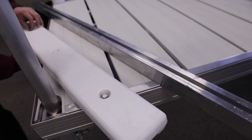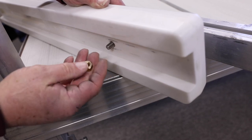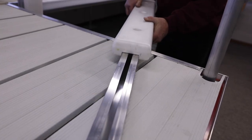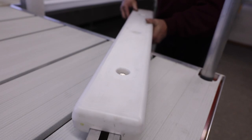Start by loosely assembling the hardware to the plastic bumper. Then slide the plastic bumper over the 60 inch upright.